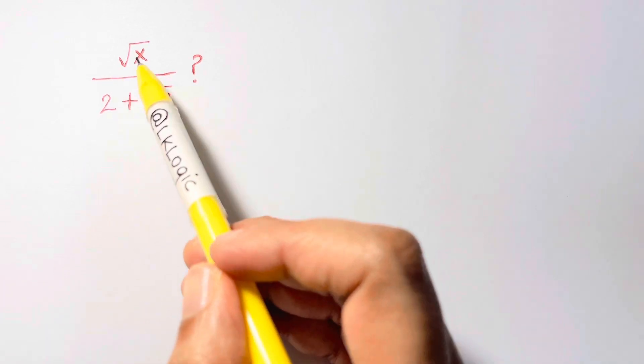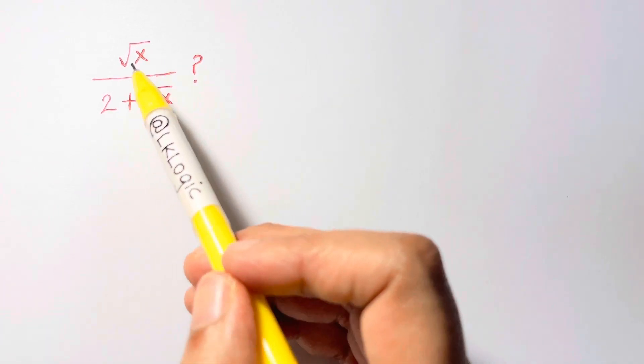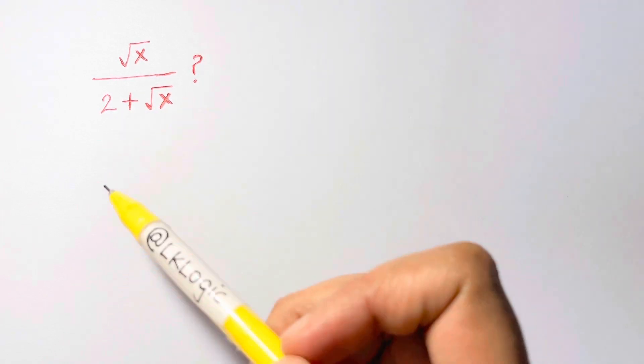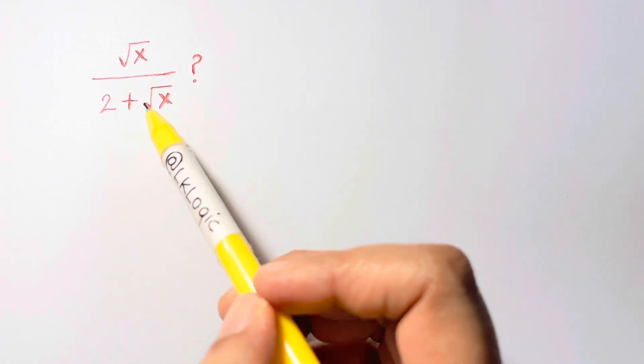Hi guys, we have a nice radical problem here: square root of x over 2 plus square root of x. How can we solve this? You have a root in the denominator, so what do we usually do? We rationalize the denominator to remove the square root.